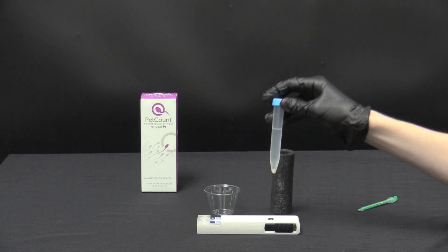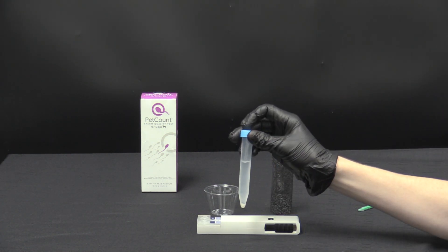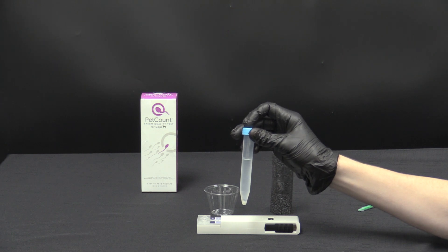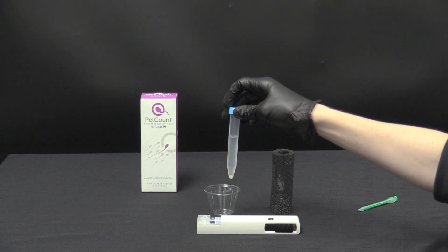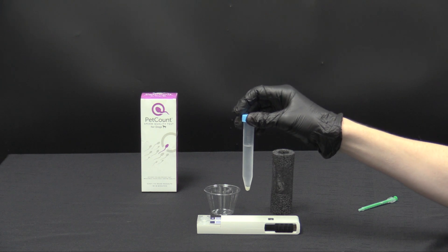Okay so next we'll take our sperm sample. Notice in this sample we have some settling due to density differences in the bottom of this tube. So prior to testing make sure your sperm sample is well mixed either in the tube or in the cup provided.